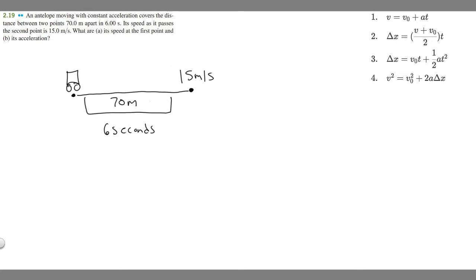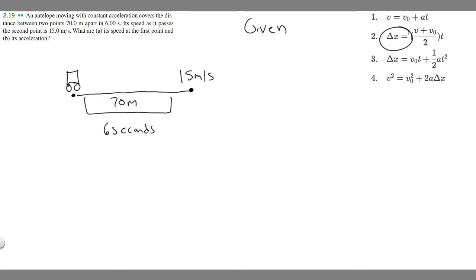Now we've drawn what's going on — let's write down our given. You should always do this with these problems. We're going to use kinematic equations to solve these, which are equations used to solve problems with constant acceleration, and the problem tells us it has constant acceleration. We want to write down every single variable: v, v₀, a, t, and Δx.